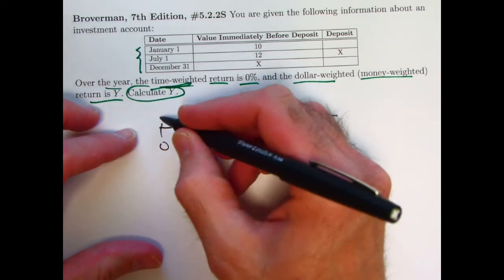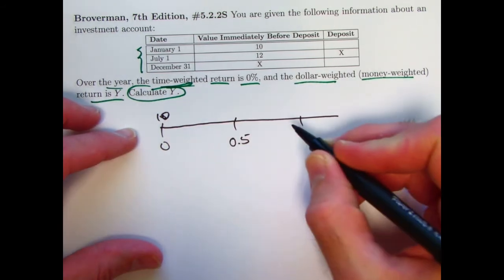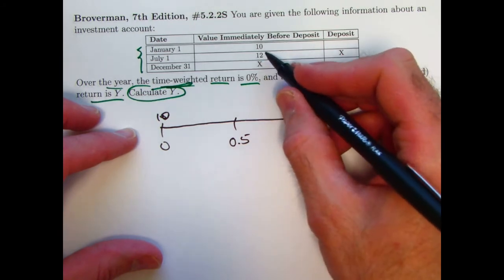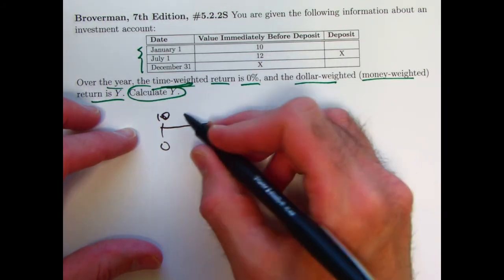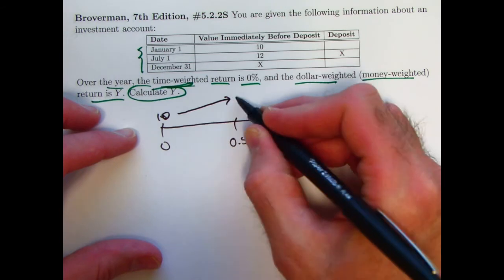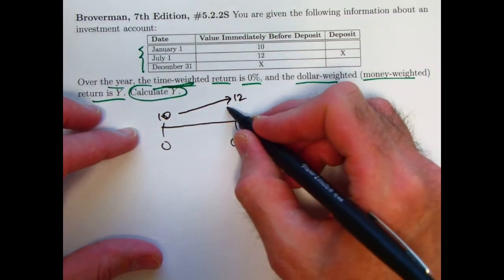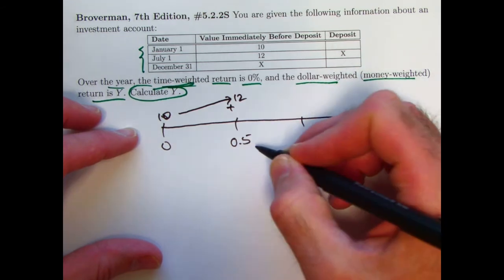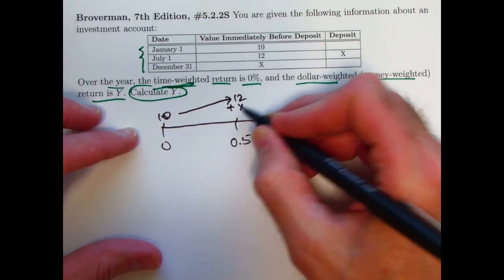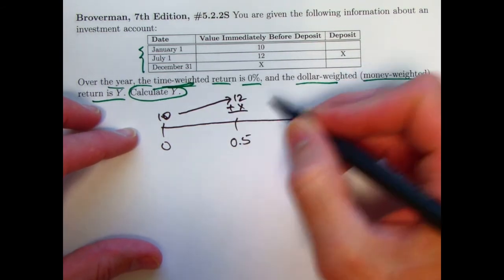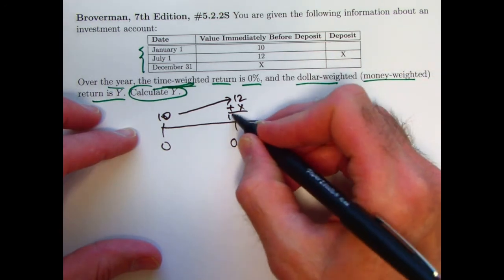But anyway, the value at time 0 is 10, and that value, you can see, grows to 12 over the course of a half year. Let me draw an arrow and a 12 up here. Then we make a deposit of x at time 0.5, July 1st. And so the balance, the value immediately after that deposit is 12 plus x.